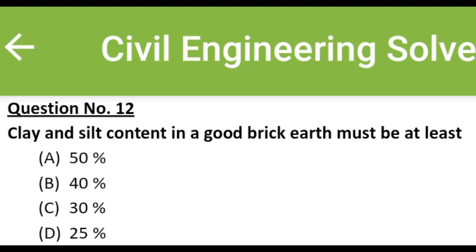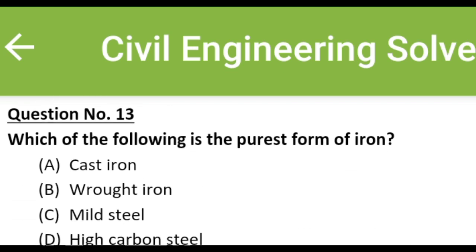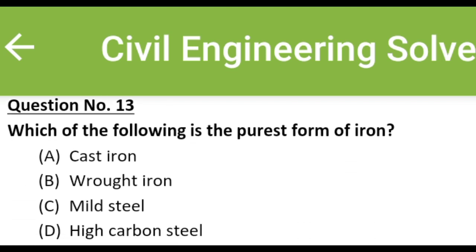Clay and silt content in a good brick earth must be at least: Option A: 50%, Option B: 40%, Option C: 30%, Option D: 25%. The correct answer is Option A: 50%. Which of the following is the purest form of iron? Option A: cast iron, Option B: wrought iron, Option C: mild steel, Option D: high carbon steel. The correct answer is Option B: wrought iron.